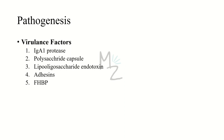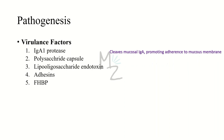The first virulence factor is IgA1 protease — immunoglobulin A1 protease. It cleaves mucosal IgA, which helps the bacteria attach to the mucous membranes of the upper respiratory tract in order to cause infection.